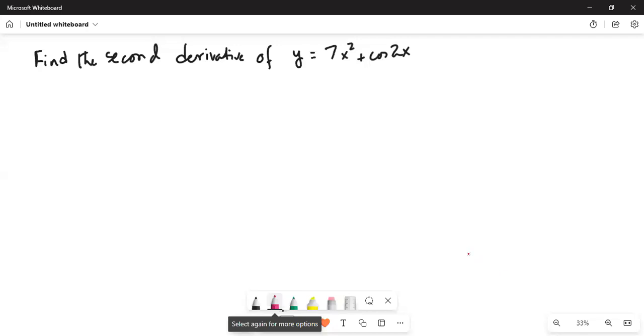Good day everybody, today we are going to find a second derivative. I'll share my computer screen with you. Let's find the second derivative of y equal to 7x square plus cosine of 2x. Let me write the function y equal to 7x square plus cosine of 2x.